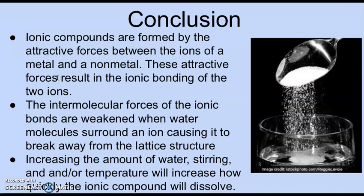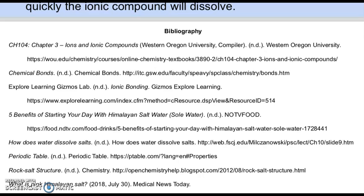In conclusion, ionic compounds are formed by attractive forces between ions of a metal and a nonmetal. The intermolecular forces of the ionic bonds are weakened when water molecules surround the ions, causing them to break away from the lattice structure. Increasing the amount of water, stirring, and or temperature will increase how quickly the ionic compounds will dissolve.